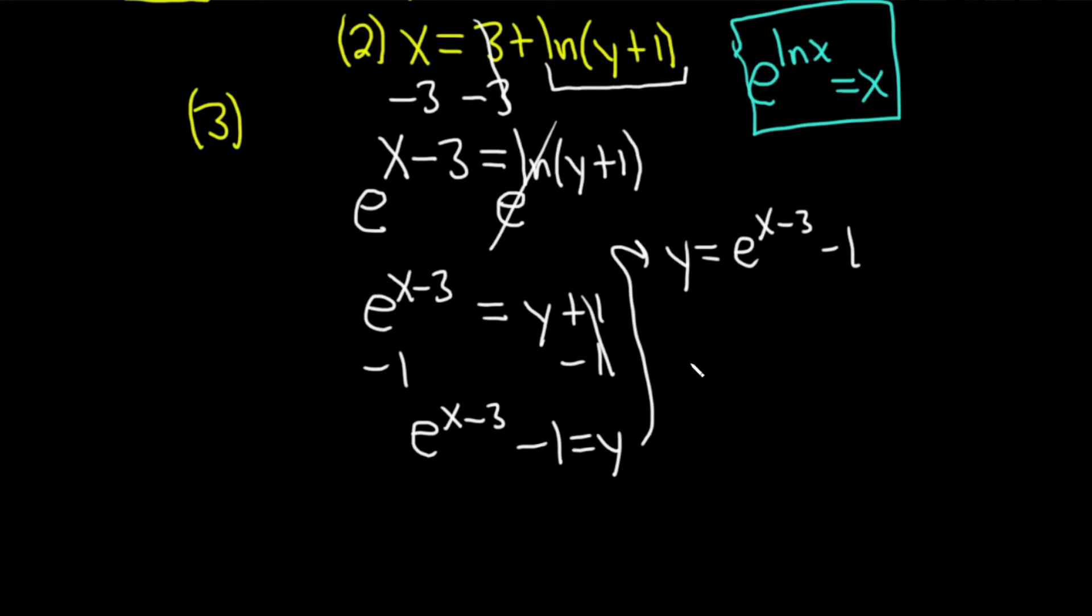The last step is to write the answer a little bit more formally using the correct notation. So we just found the inverse function. So the way to write that is f inverse, you write a little negative 1 there as the exponent, (x). You read that as f inverse of x. That's equal to e^(x-3) - 1. The inverse function f^(-1)(x) = e^(x-3) - 1.